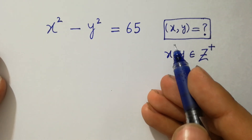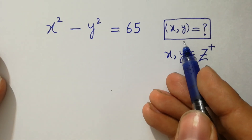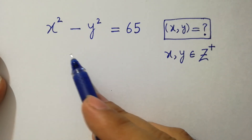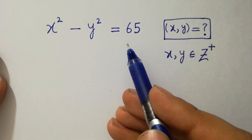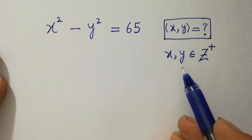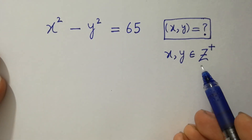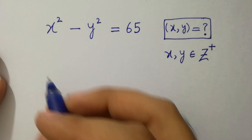Hello friends. Find the value of x and y if x squared minus y squared equals 65, where x and y belong to positive integers. Let's have a solution.